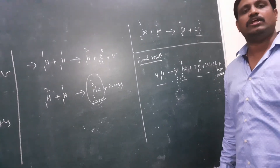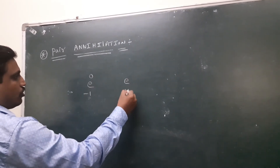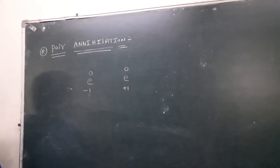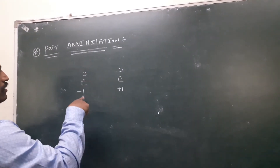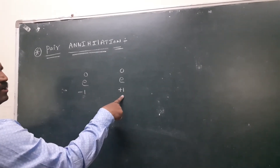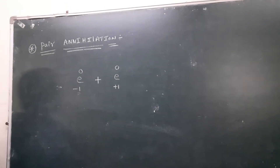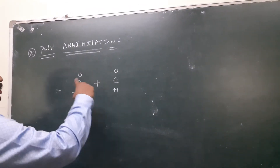Next I will discuss Pair Production and Pair Annihilation. Pair Annihilation: a pair means an electron and a positron. Annihilation means the electron and positron are both combined together.